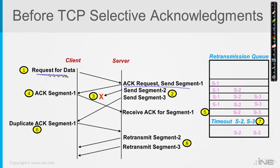Whatever the sequence number was in the request, he's acknowledging it. So he sends segment one, segment two, and segment three, because when TCP is given the go-ahead, it's sort of like a gun going off — he can shoot multiple bullets at one time if they're all queued up. As each segment is sent, we place it into the retransmission queue in case we have to retransmit it. By the time we get down to here, segments one, two, and three have all been placed in the retransmission queue.